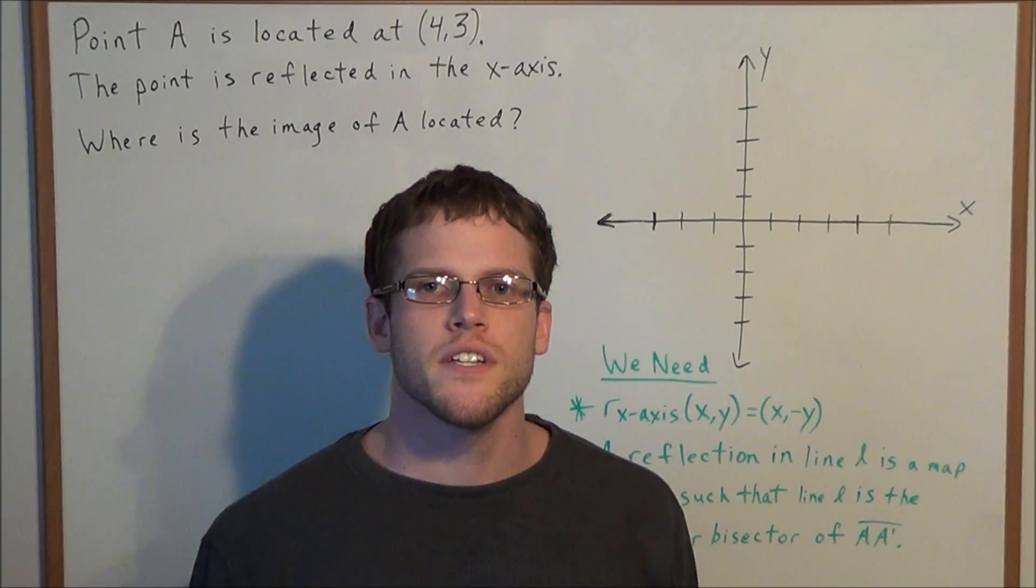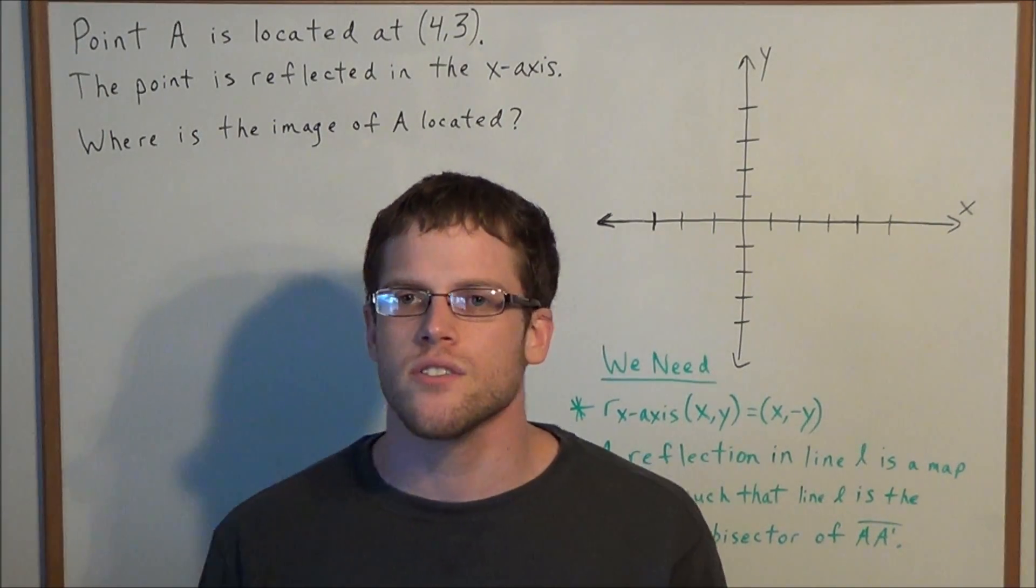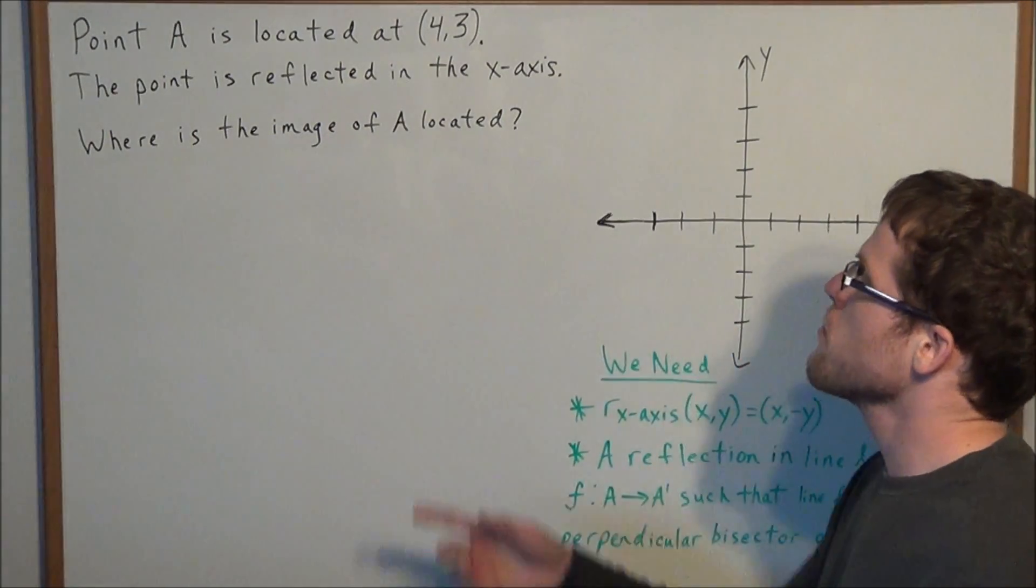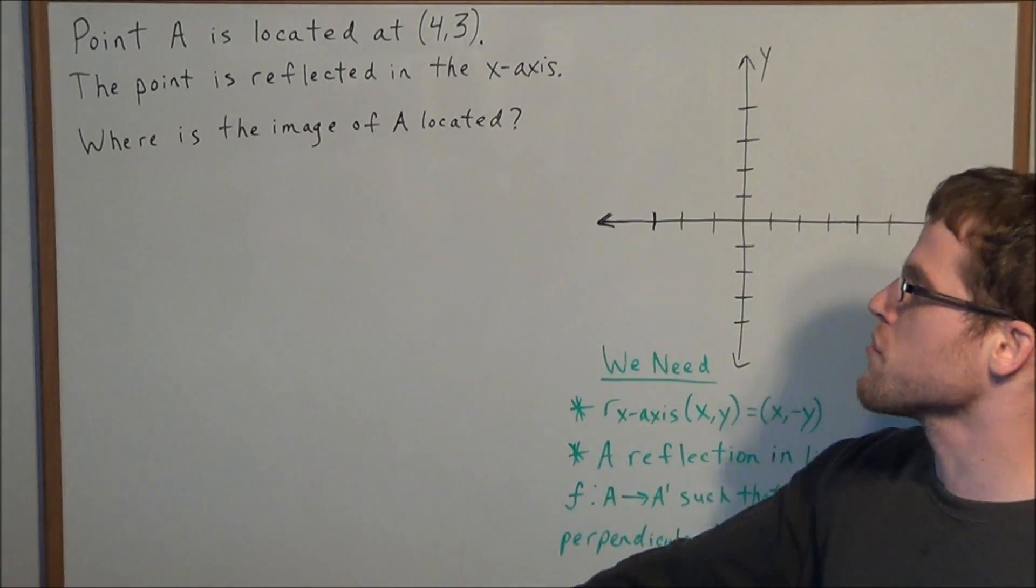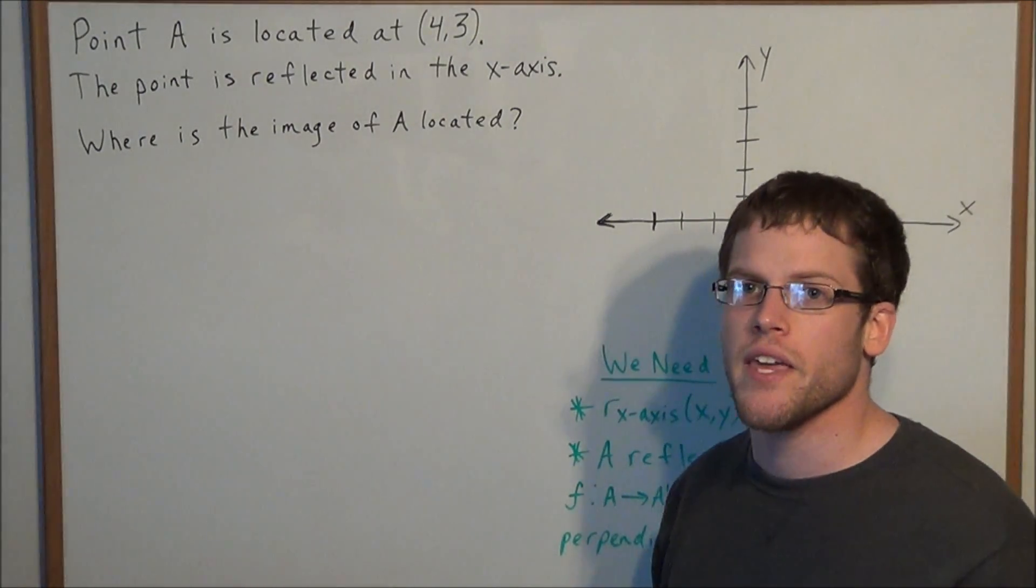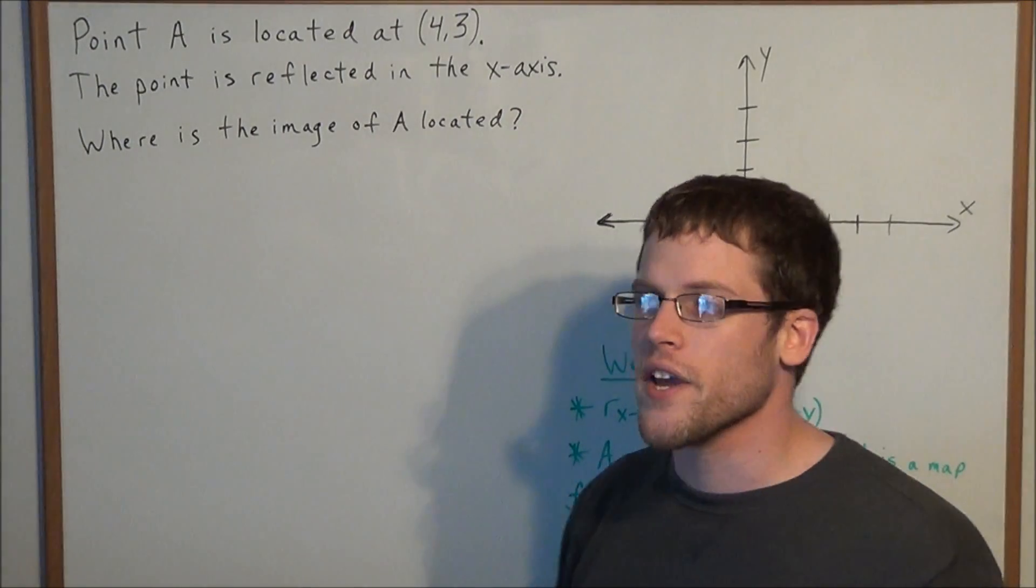Hello YouTube students, my name is Vincent and today I want to take a look at reflections. I want to look at the problem: point A is located at (4,3), the point is reflected in the x-axis. Where is the image of A located?